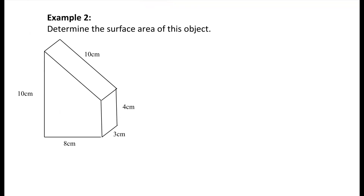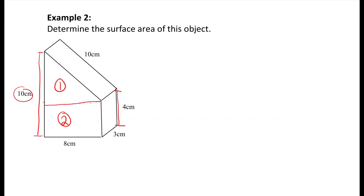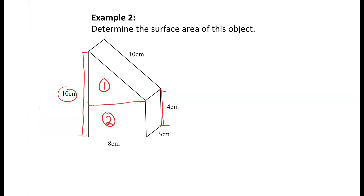The next shape is an awkward one to work with. We want to split it into two different shapes by drawing a line across it, giving us a triangular prism on top and a rectangular prism on the bottom. We also have to break up the 10 centimeter measurement: the height of the triangular prism portion is 4 centimeters, and 10 subtract 4 leaves 6 centimeters for the triangular part.